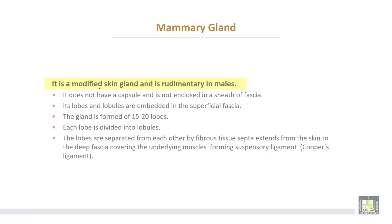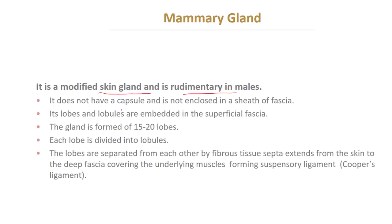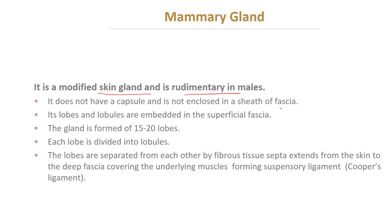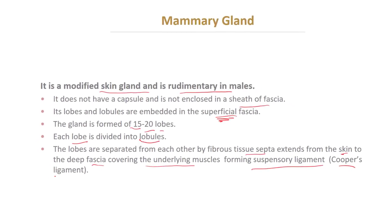The mammary gland is a modified skin gland and it is rudimentary in males. It does not have a capsule and does not lie inside the sheath of fascia. Its lobes and lobules are embedded in the superficial fascia. The gland is formed from 15 to 20 lobes, each lobe subdivided into lobules. The lobes are separated from each other by fibrous tissue septa extending from the skin to the deep fascia covering the underlying muscles, forming suspensory ligaments — sometimes called Cooper's ligament of the breast.